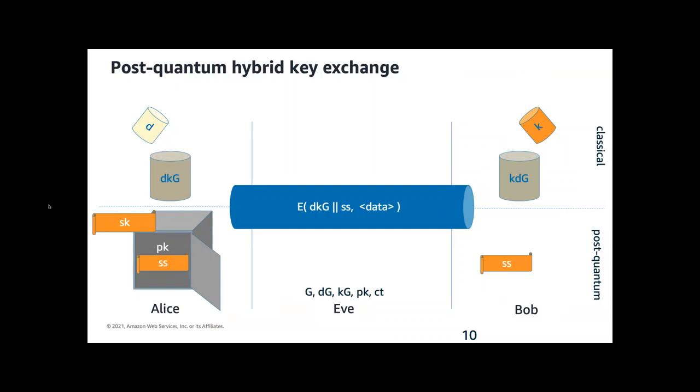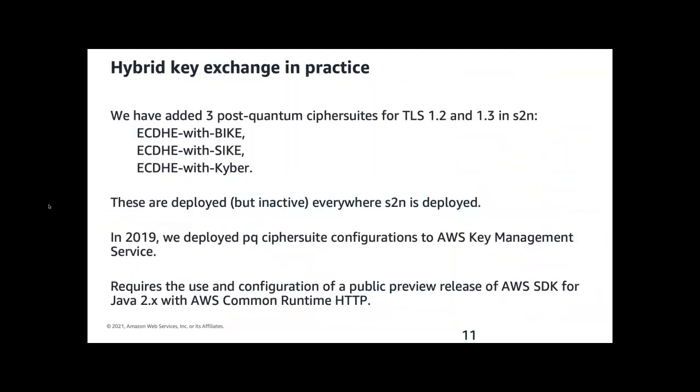Any onlooker that gets to see all the public values G, DG, KG, the public key, and the ciphertext doesn't learn any of these secret values. The protocol flows designed to be as secure as the strongest of the two schemes. An adversary would need to break both of these schemes to break the key agreement protocol.